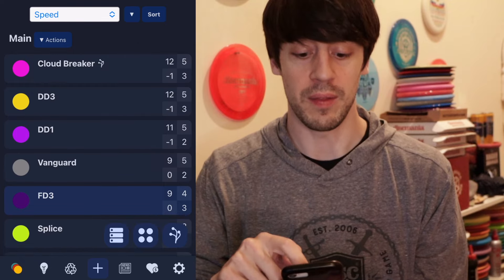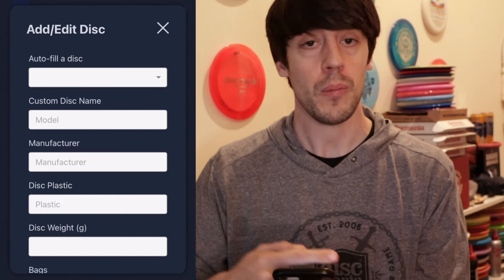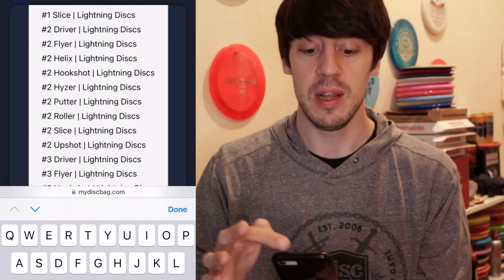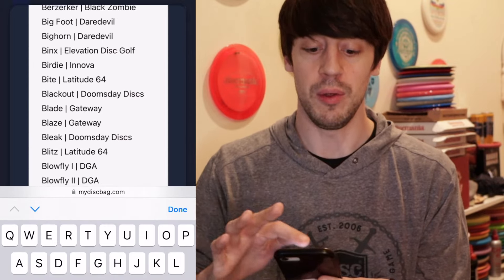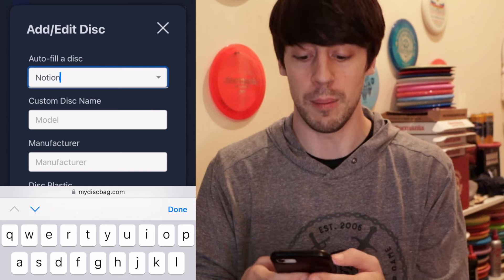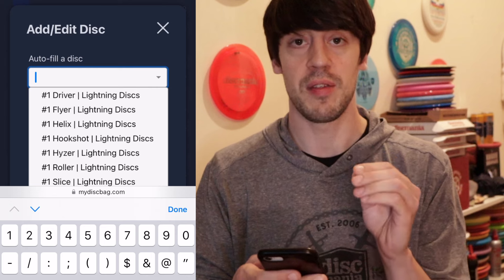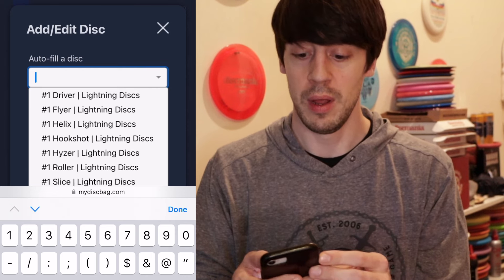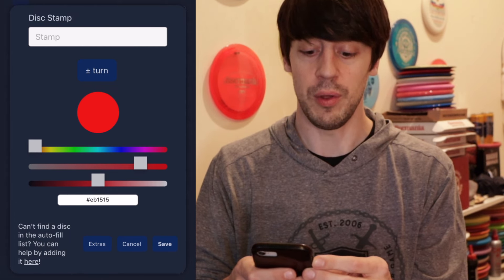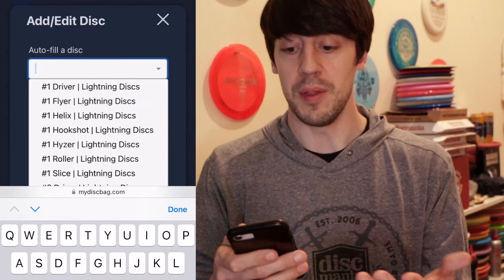There was one disc in my bag that actually wasn't in the system, the Notion. Just to show you how to add a disc, if you hit the little plus sign on the bottom, this is where you add each individual disc. So you can autofill a disc, they have literally every single disc you could think of except for like brand new releases. When I went to do the Notion earlier and I typed it in, nothing came up. But say I typed in MD5, it would automatically come up. So if you have a disc that is not coming up for whatever reason, you can actually go down to the bottom and it says right on the bottom left there, can't find a disc, you can help by adding it here. So I just added the Notion and it takes a couple days to get approved.